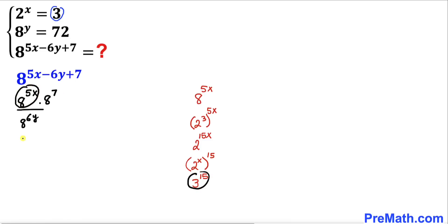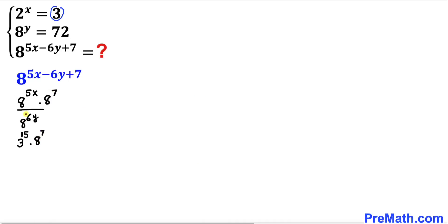So the 8^(5x) part is replaced by 3^15. Let me write down 3^15, and I'm going to leave the 8^7 term as it is in the numerator.